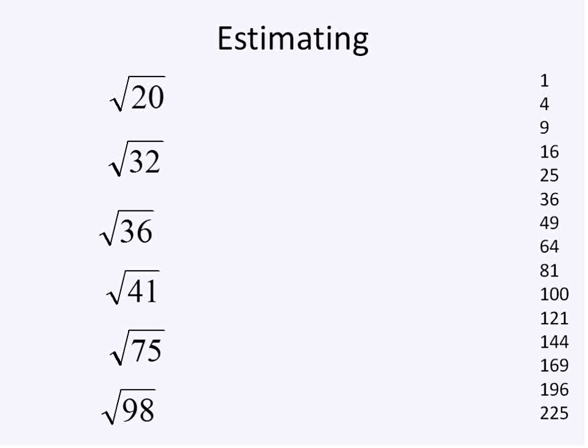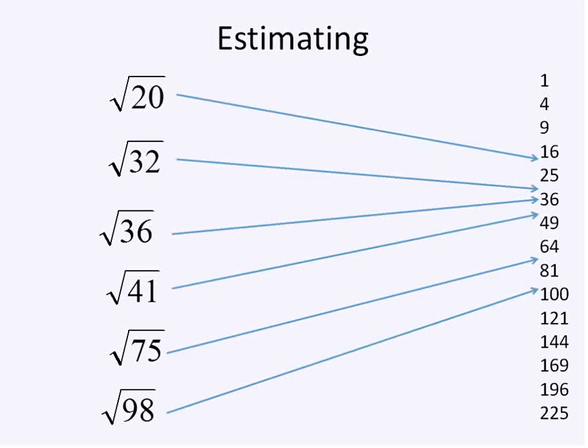But if we were estimating them, I've taken them and listed them in order from least to greatest. If we were estimating them without using a calculator, I would look at 20 and say, well, 20 is between 16 and 25, so the square root of 20 would be between 4 and 5. The square root of 16, the square root of 25. 32 falls between 25 and 36. So that square root of 32 is going to fall between the square root of 25, which is 5, and the square root of 36, which is 6. Let's put some arrows up there just to show you our approximate guesses on those numbers.